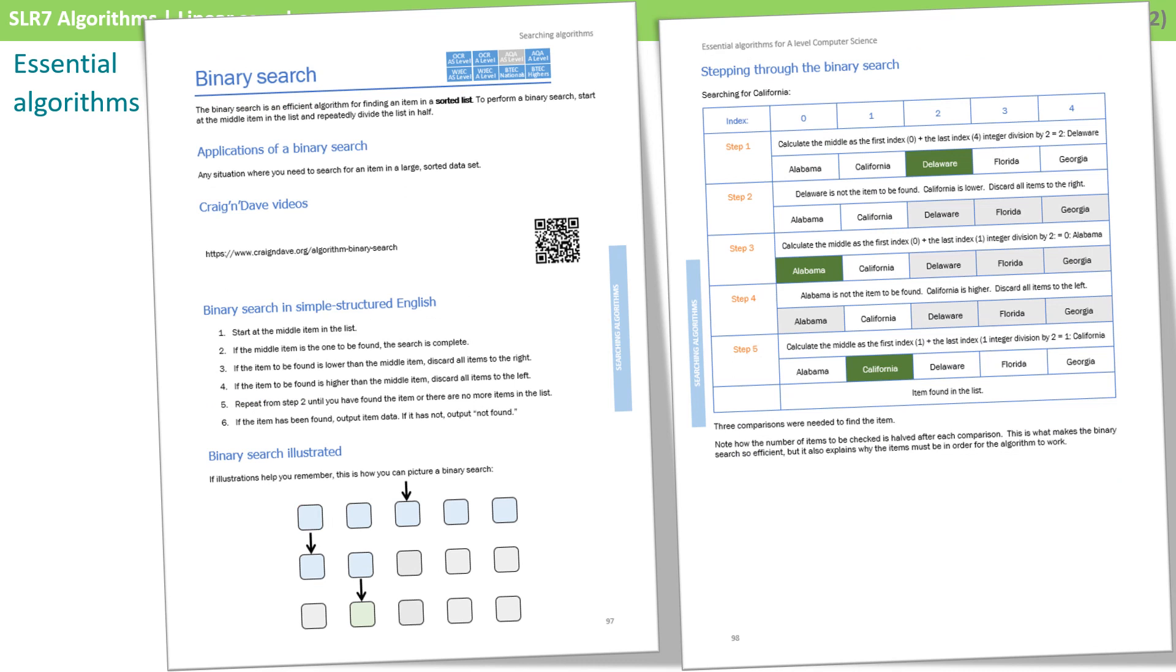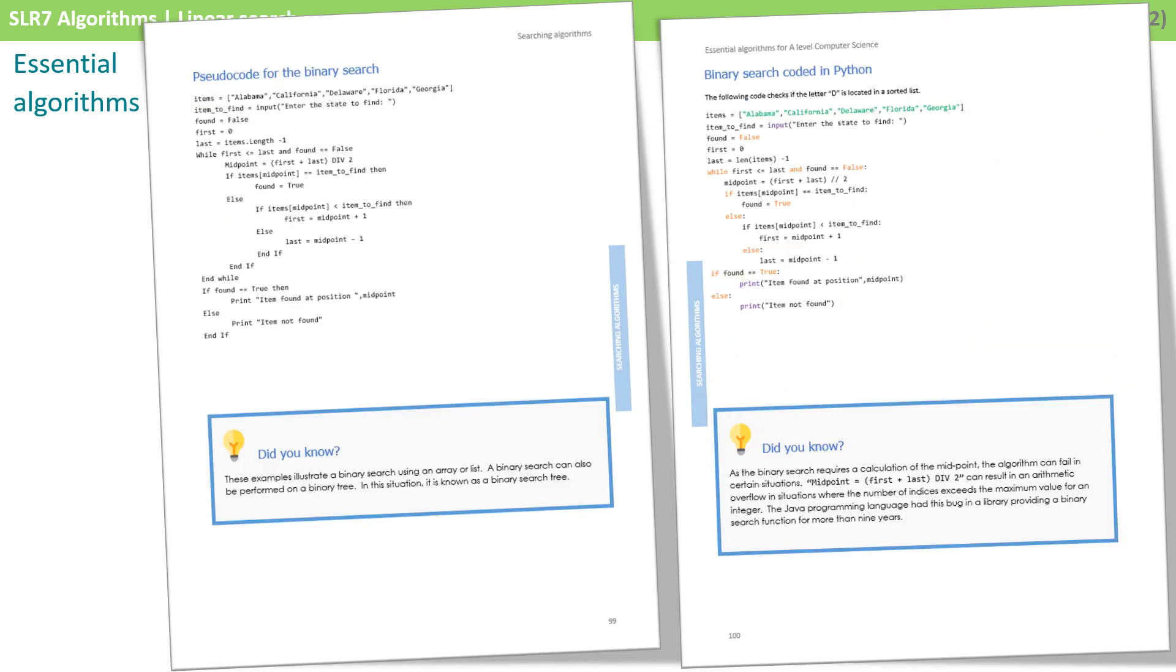Every chapter is presented in the same way. We introduce the algorithm from a high level perspective and provide a link to our videos. We then layout the algorithm in simple structured English so you can get your head around it. We illustrate the algorithm in the form of a diagram and then provide an example of stepping through it. All of these steps are designed to really get you to understand the algorithm before we present you with pseudocode.